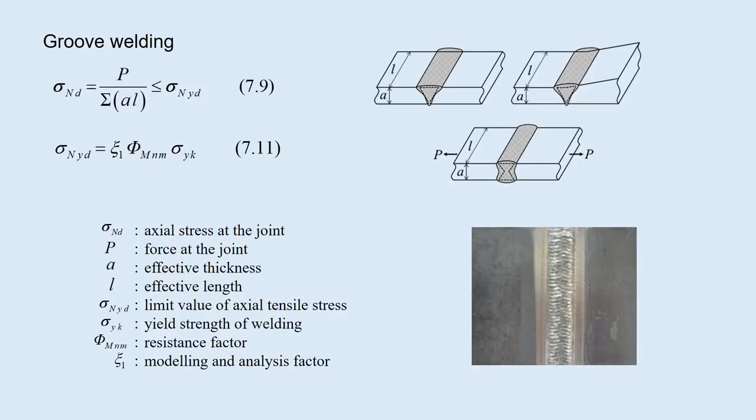Suppose the groove welding is subjected to axial force. It is judged not to exceed limit state 1 when equation 7.9 is satisfied. This equation means that the welding does not yield, stays elastic, and satisfies limit state 1. The effective thickness A is the plate thickness.